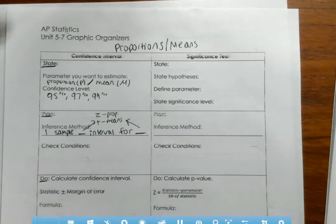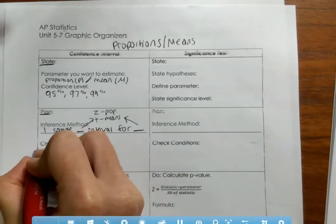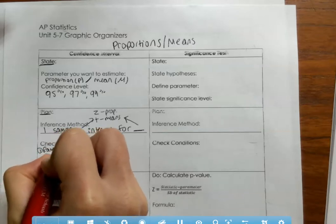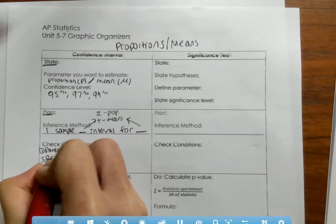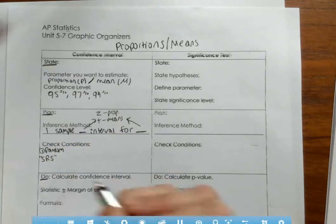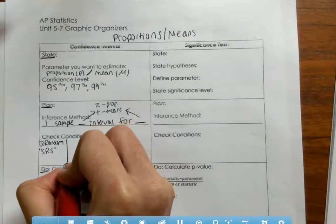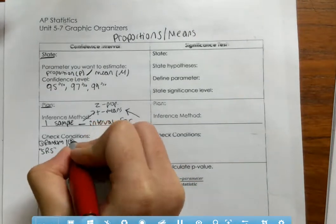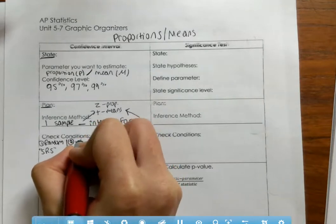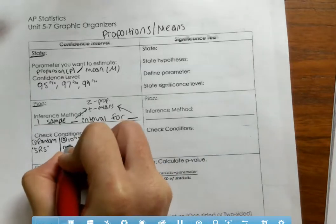You're also going to check your conditions. The conditions are pretty similar for both proportions and means — the first two are exactly the same. Number one: the random condition. You want to have a simple random sample, and the problem should tell you that. Remember, the random condition is so that we can generalize to a population — if we don't have a random sample, we cannot generalize to a population. The second condition is the 10% condition: the sample size n must be one-tenth of the total population N.